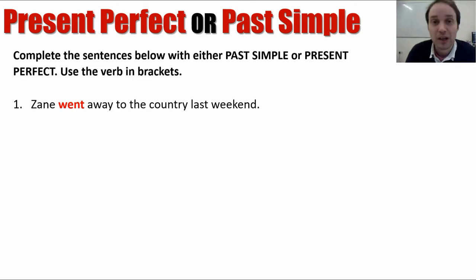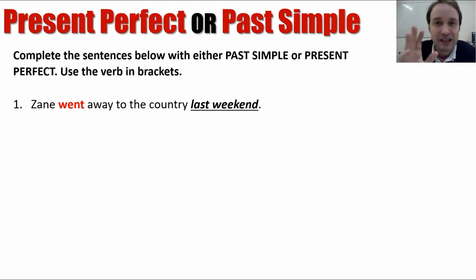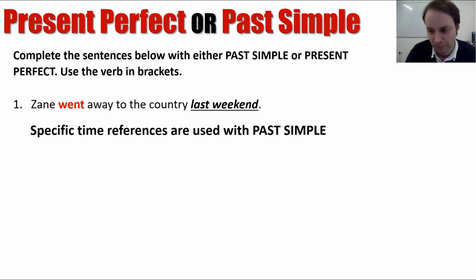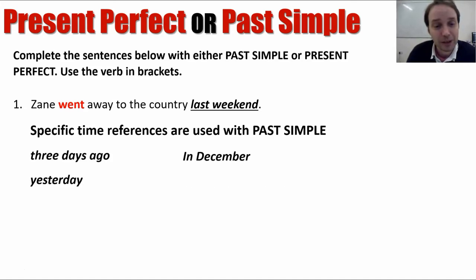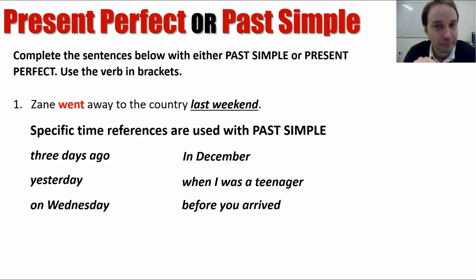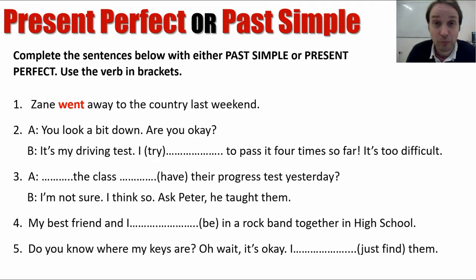The reason is that at the end of the sentence we have 'last weekend' — this is a specific time reference. When we have a specific time reference we cannot use present perfect; we must use past simple. Examples of specific time references include: three days ago, in December, yesterday, when I was a teenager, on Wednesday, and before you arrived. If we have a specific time reference, we must use past simple.